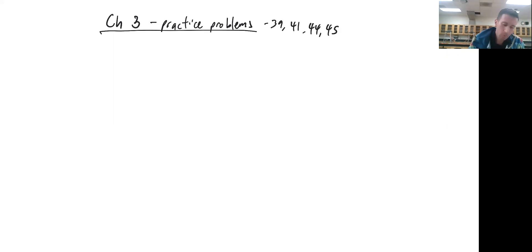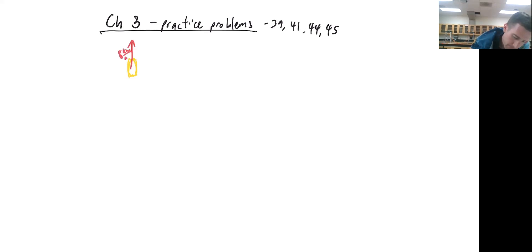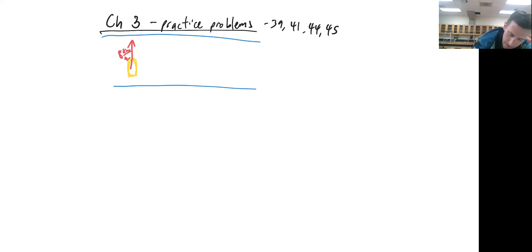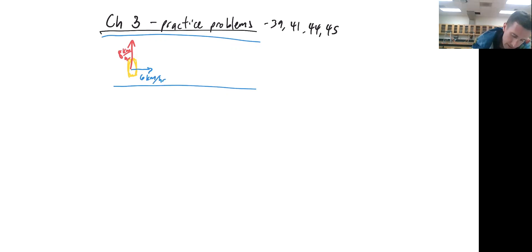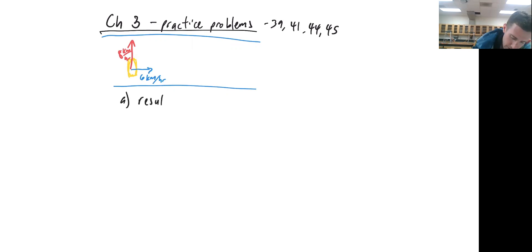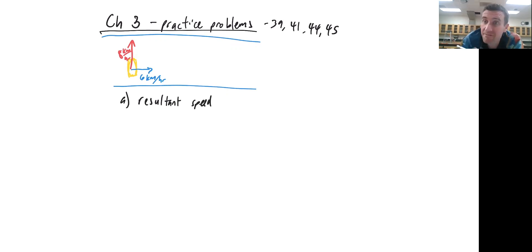Starting with 39, we've got this little diagram of a boat. There's a boat and the boat is going eight kilometers per hour across the river. Here's my river, and the river is going downstream at six kilometers per hour. So both of these are vectors and part A is asking what is the resultant speed of the boat. The first part is remembering that resultant means sum — when you add vectors, the vector you end up with is called the resultant vector.